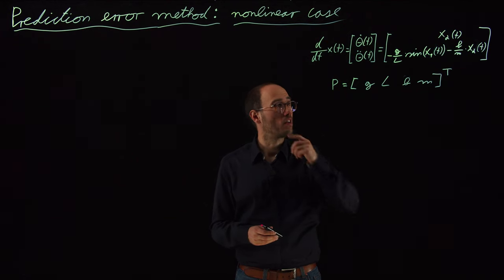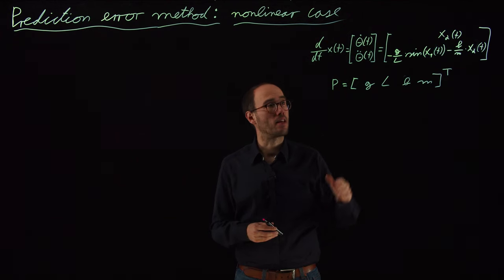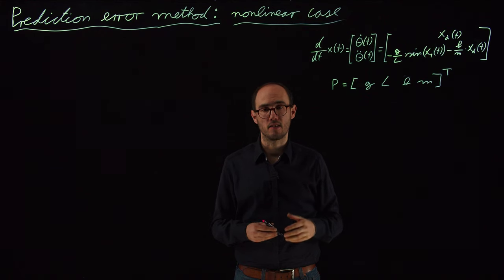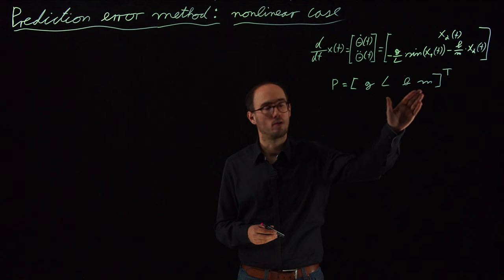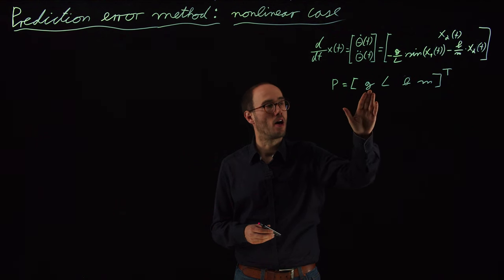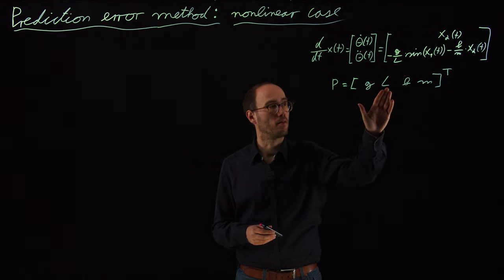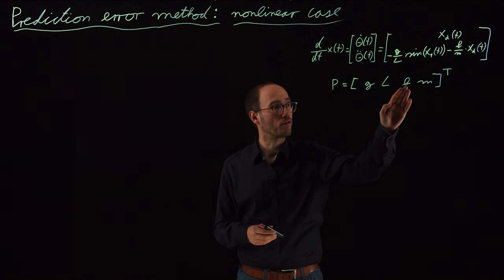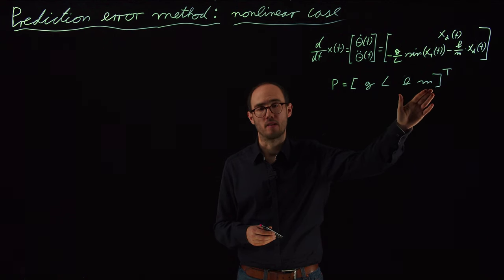In this nonlinear ODE with the two states, the pendulum displacement angle theta and the angular velocity theta dot, we have in total four parameters, which are the standard gravity g, the pendulum length l, the friction coefficient b, and the pendulum mass m.